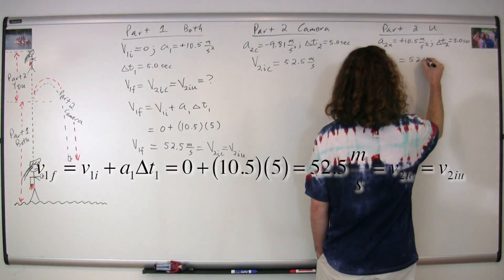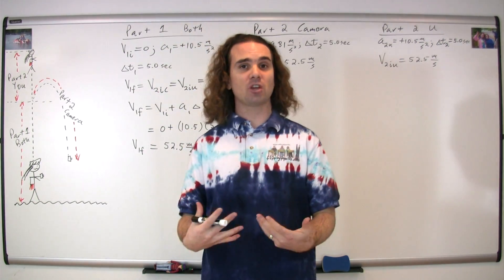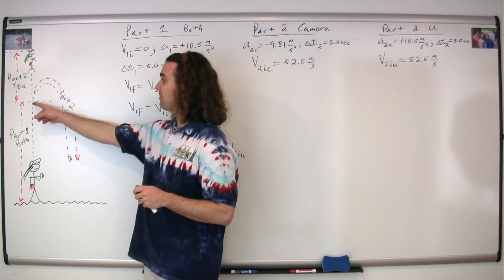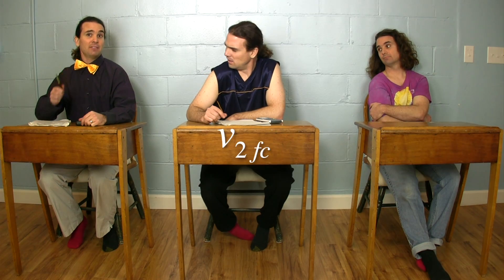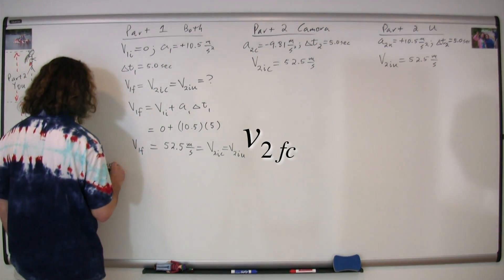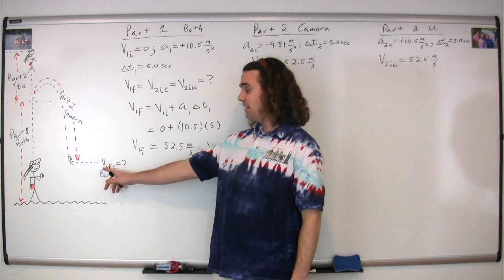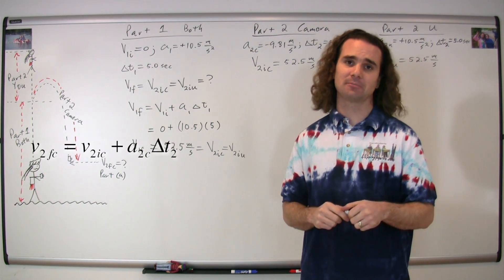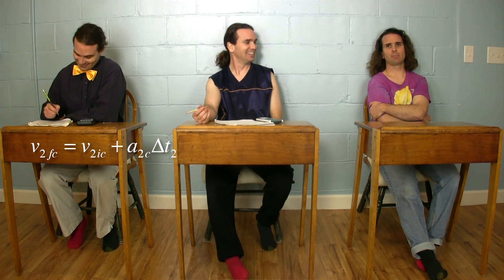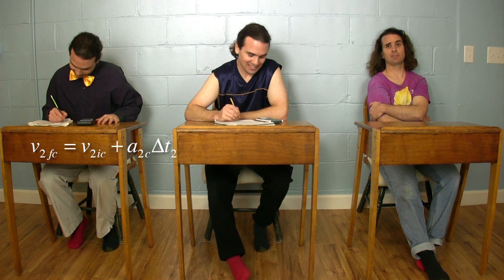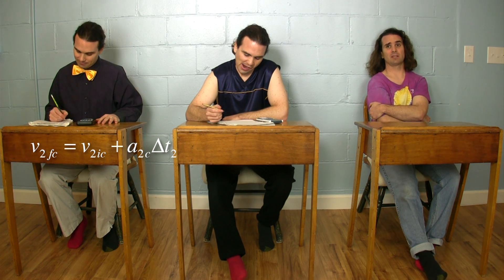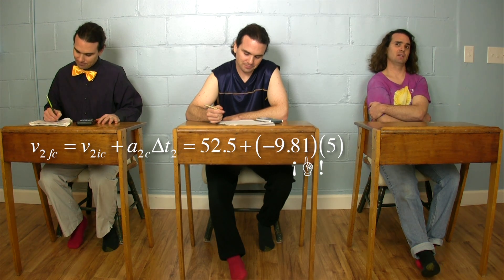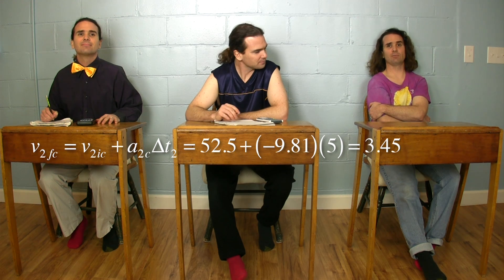Using the correct subscripts, what we're solving for in Part A is the final velocity for Part 2 for the camera. The velocity Part 2 final for the camera equals the velocity Part 2 initial for the camera plus the acceleration Part 2 for the camera times the change in time for Part 2. We have all those numbers, so it works out to be 52.5 plus negative 9.81 times 5, which equals 3.45 meters per second.